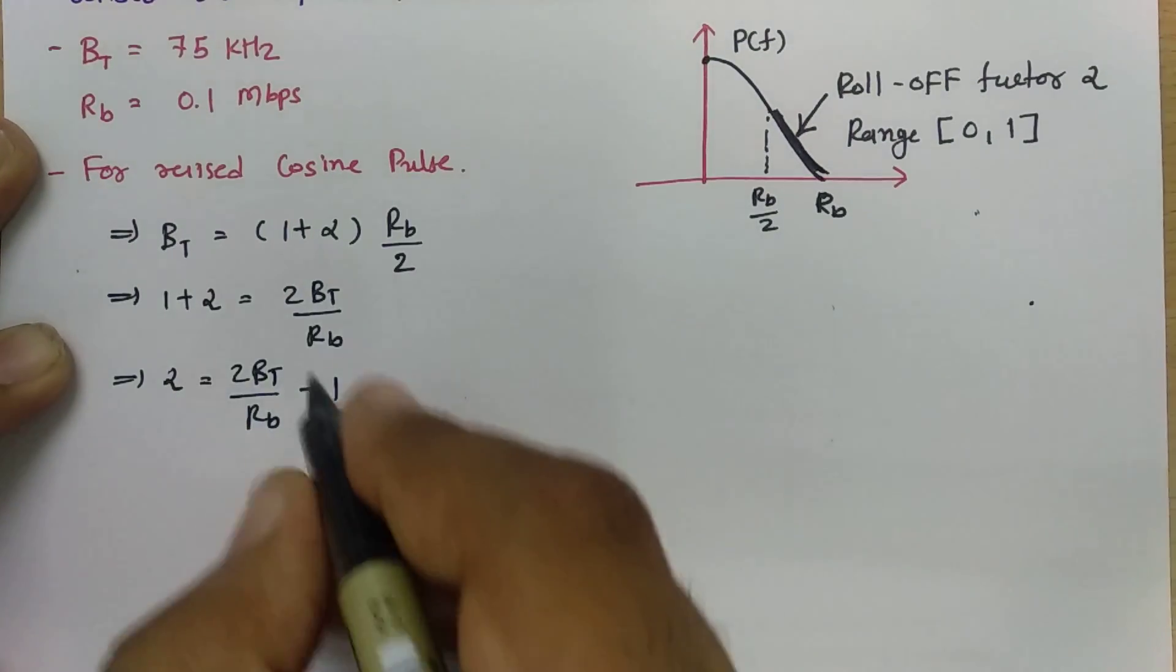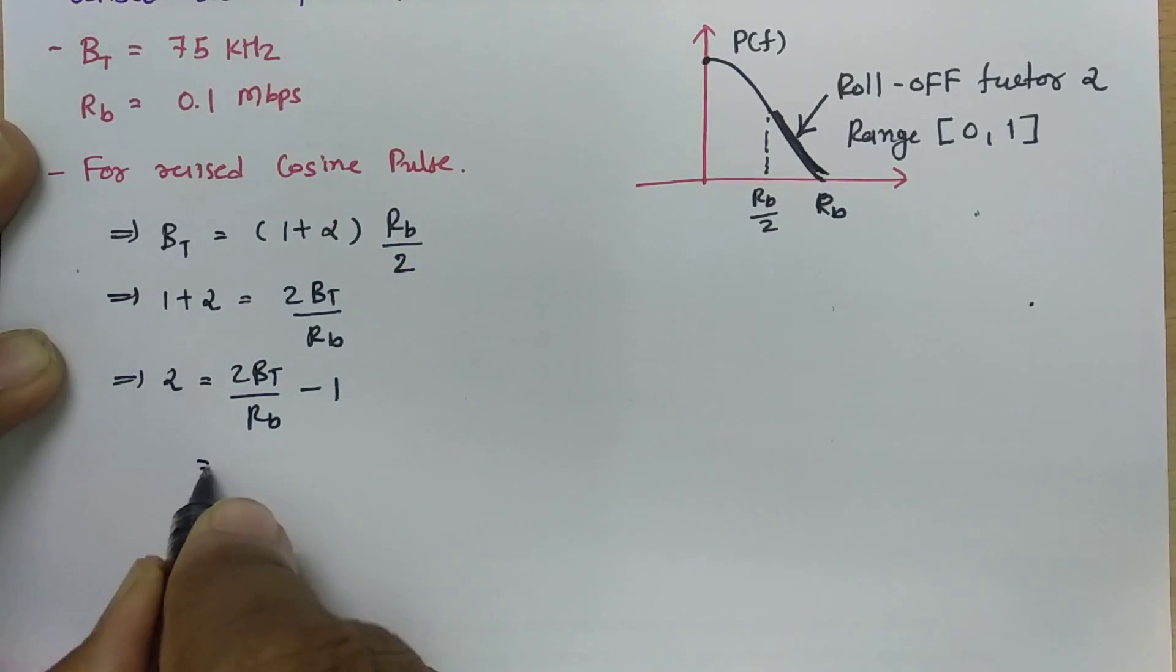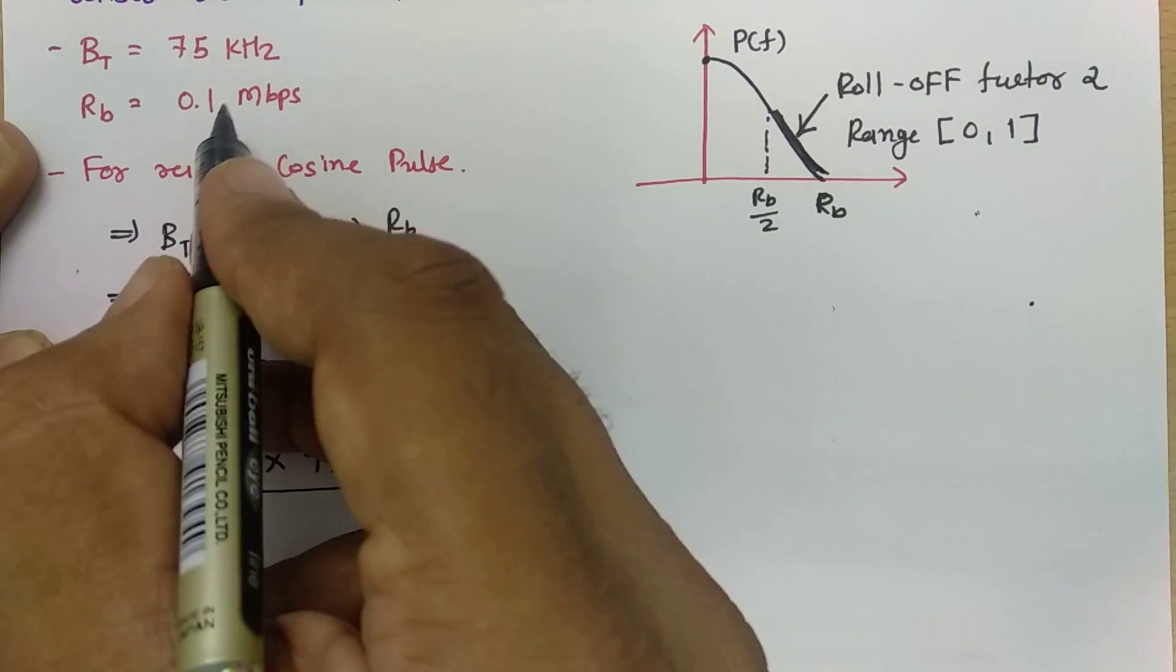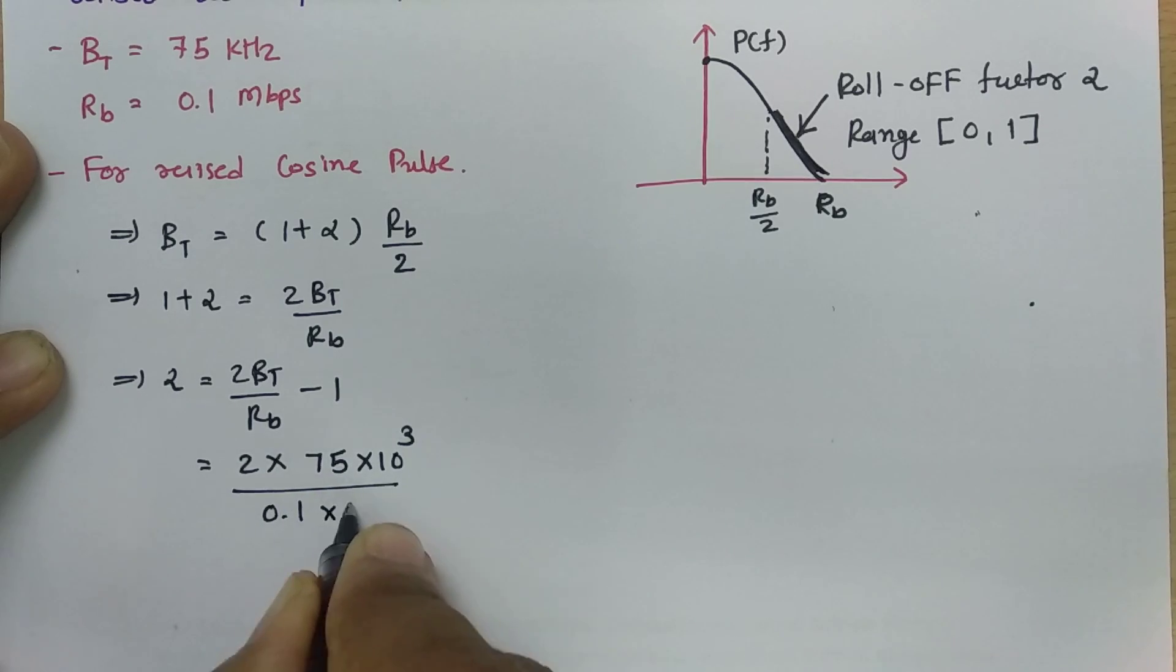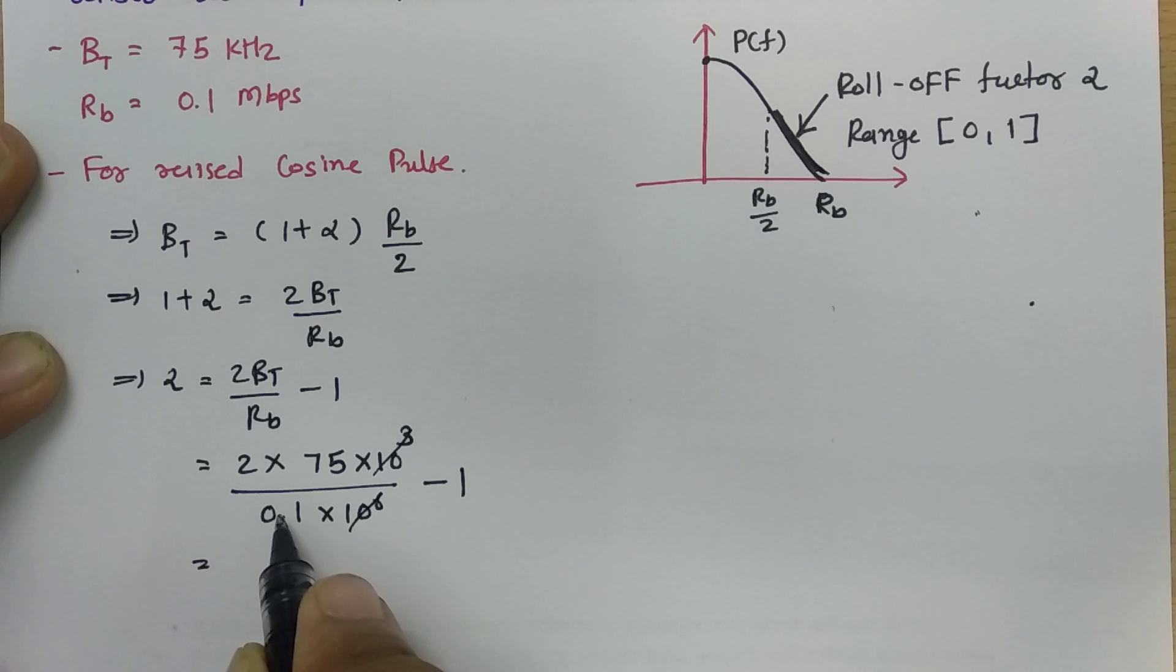Now we have this data. BT is 75 kilohertz and RB is 0.1 Mbps. So let us place it. So 2 into BT that is 75 kilohertz, kilo means 10 to the power 3, divided by RB that is 0.1 megabits per second, mega means 10 to the power 6, minus 1. Now if we solve this, 10 to the power 3 will get cancelled to this 10 to the power 6. So it will be 10 to the power 3 now. And 1000 into 0.1 that is 100. So 2 into 75 that is 150 divided by 100, that is 1.5 minus 1, so that is 0.5.